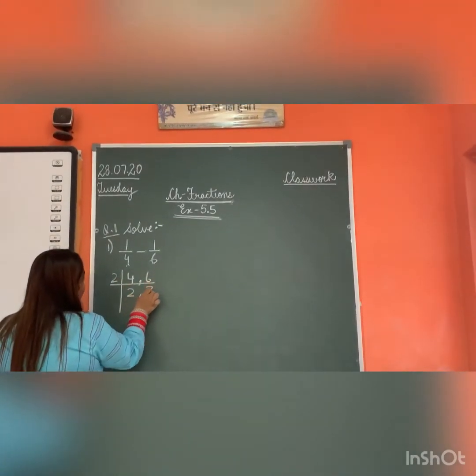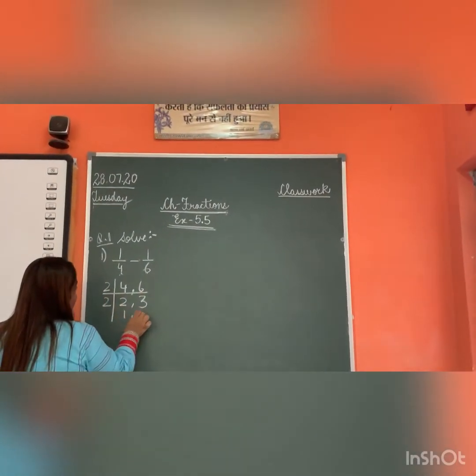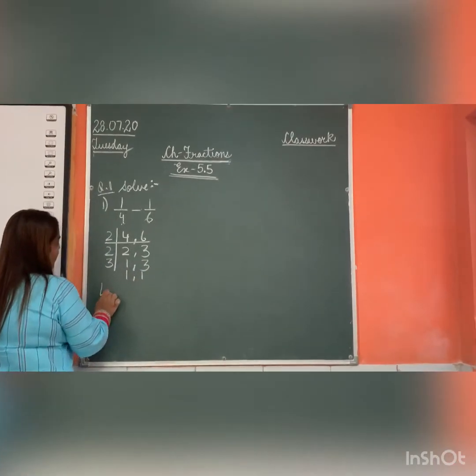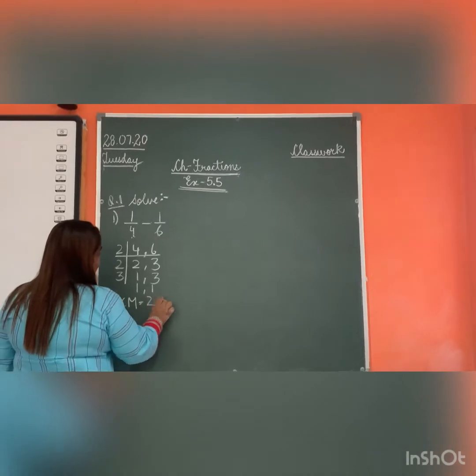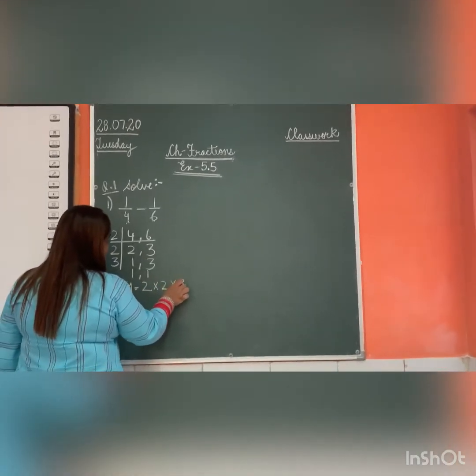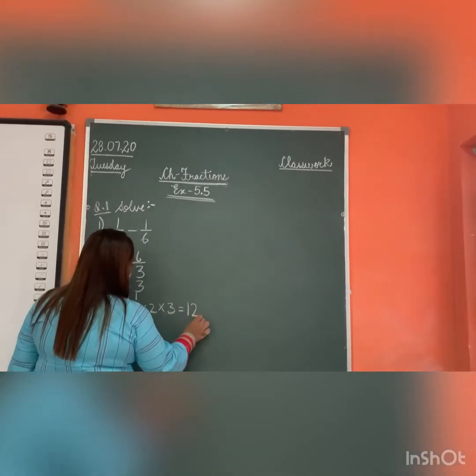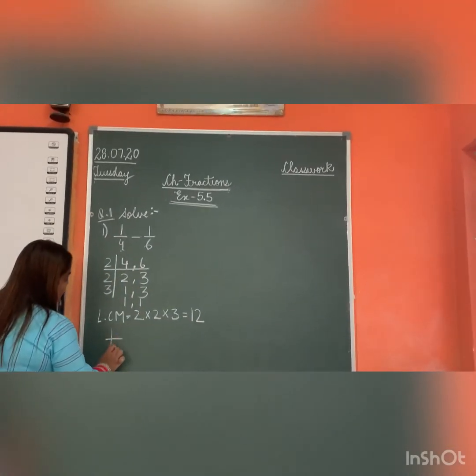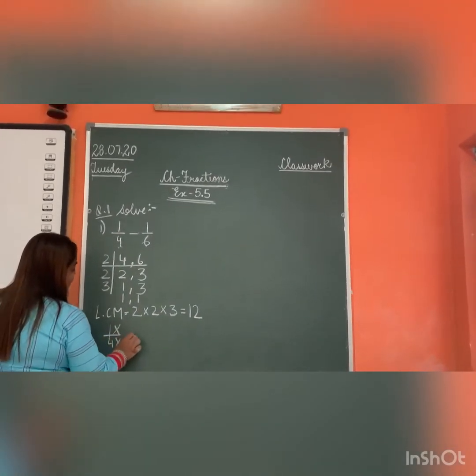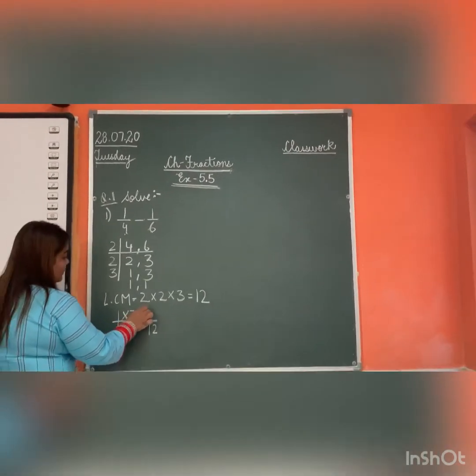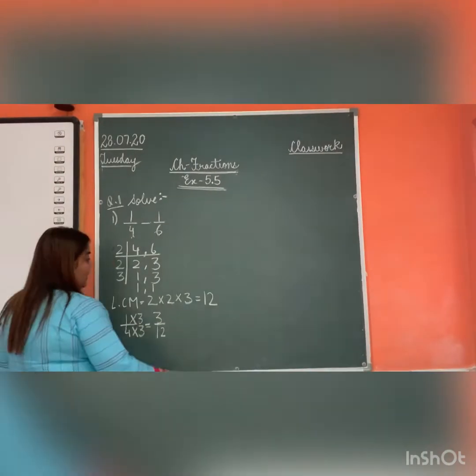2 into 4, 3 into 2, 2 ones, 3s, 3 ones. So LCM kitna aya mera? 2 multiply 2 multiply 3. 2 twos are 4, 4 threes are 12. So 1 by 4 multiply 4, 4 threes are 12. Niche threes kiya, over threes, 3 by 2 is 12.